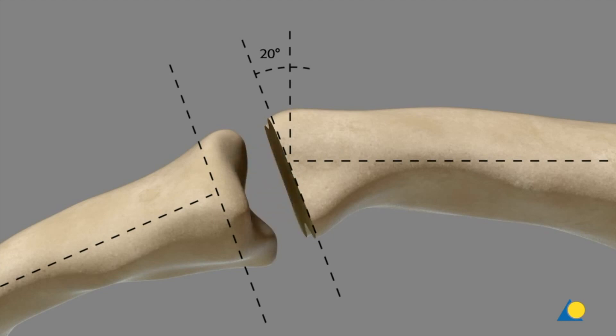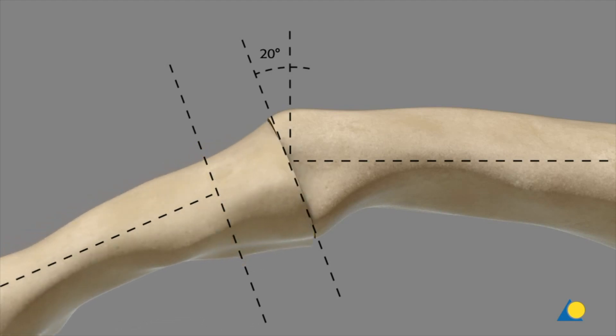Depending on the angle of the arthrodesis, the osteotomy is performed through the head of the proximal phalanx, while the base of the middle phalanx is resected perpendicular to the longitudinal axis.